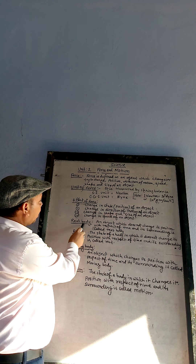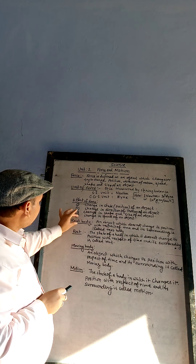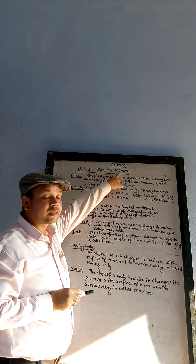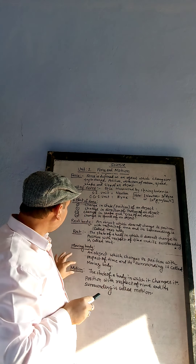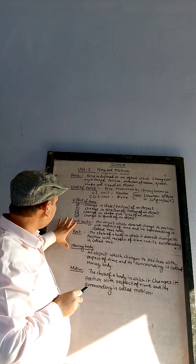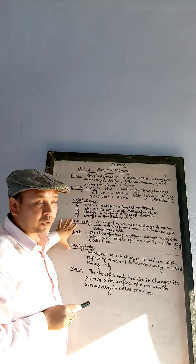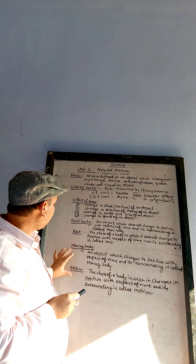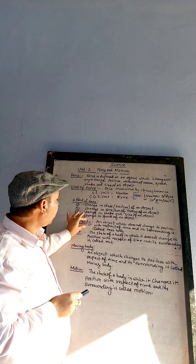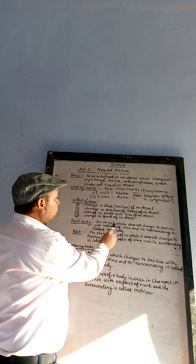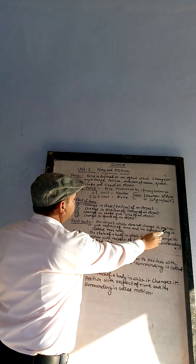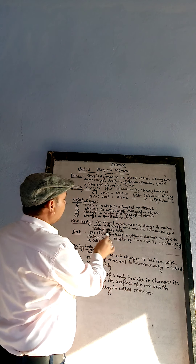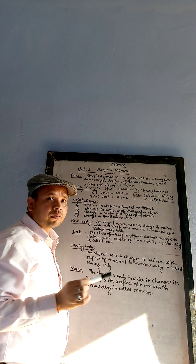The next heading is Rest Body. These terms — rest body, rest, moving body, and motion — belong to this heading. In order to study motion, we have to know these things; it is very important. Rest body: an object which does not change its position with respect to time and its surroundings is called a rest body.